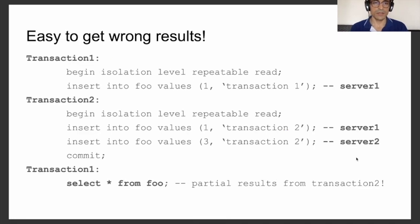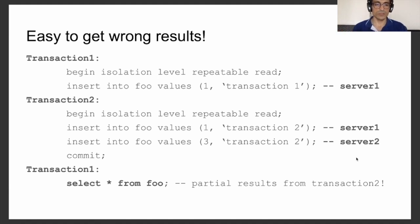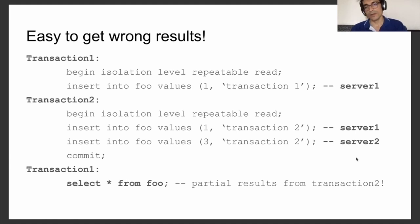In such a setup, it's really easy to get wrong results. Consider two concurrent transactions interleaved as shown on this slide. The first transaction inserts one tuple routed to server 1. The second transaction inserts two tuples routed to server 1 and server 2 each. Then the second transaction commits and the first transaction runs a SELECT. According to the repeatable read isolation level, the SELECT should only see results of transaction 1. We use repeatable read because Postgres FDW uses this isolation level on foreign servers.